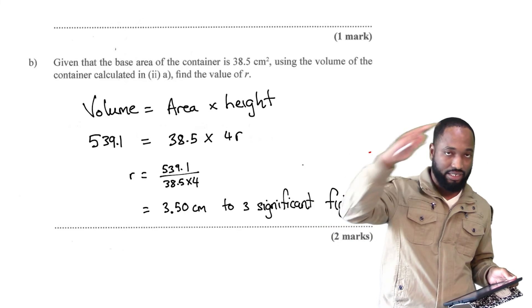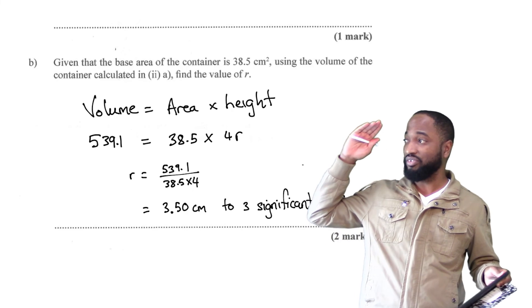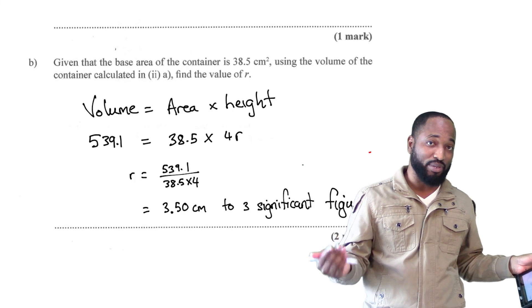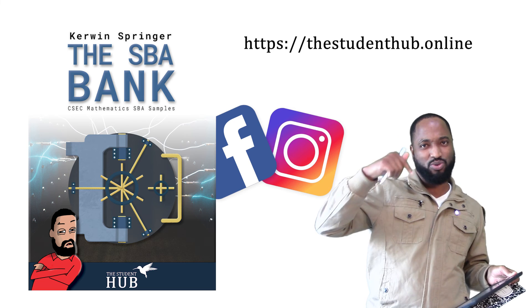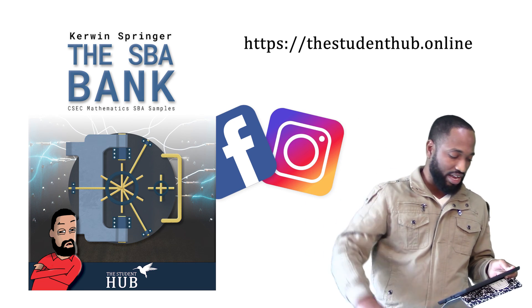Love and blessings. Don't forget to subscribe. Don't forget to like. The usual. If by chance you're watching this and you're not doing the paper three but you're doing the SBA, I have the SBA bank out right now. You can just go to thestudenthub.online. The link is in the description and you can get that book.